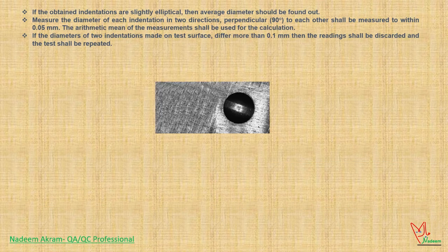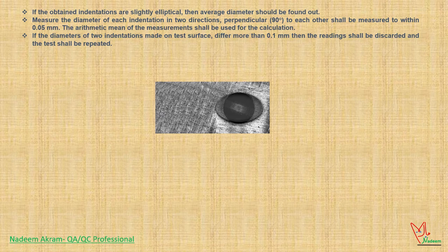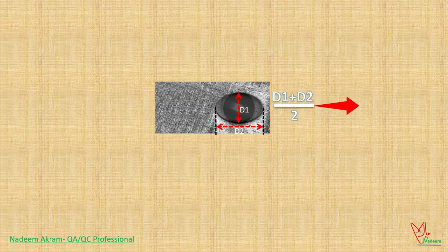If the obtained indentations are slightly elliptical, average diameter should be found out. Measure the diameter of each indentation in two directions.